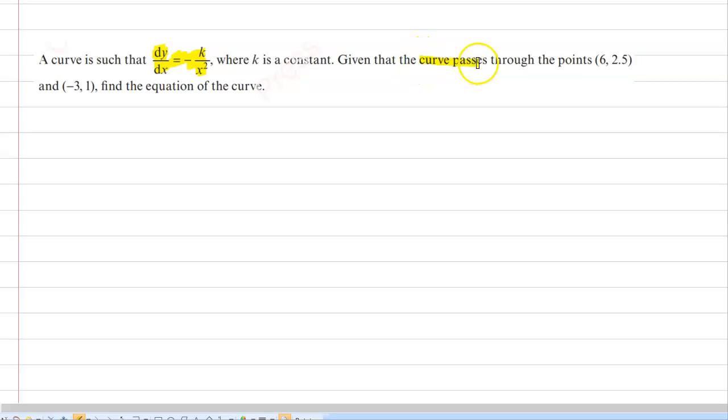Given that the curve passes through the points (6, 2.5) and (-3, 1), we need to find the equation of the curve.